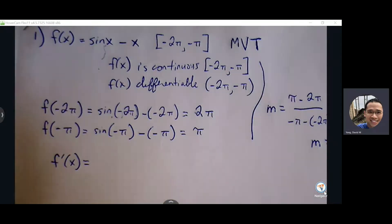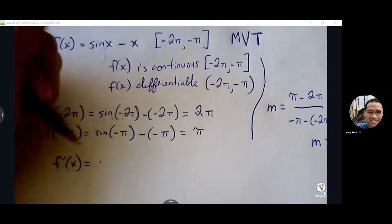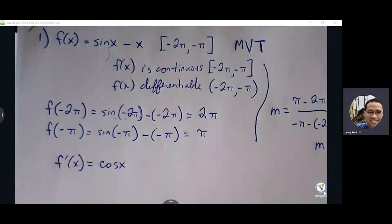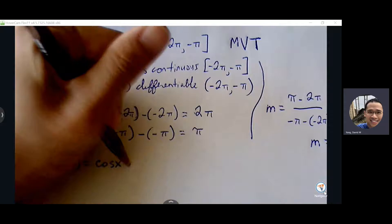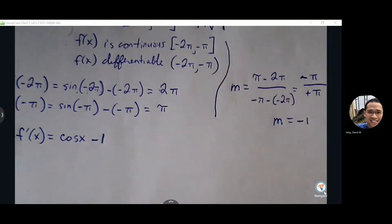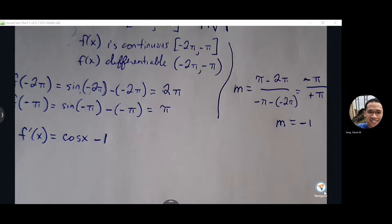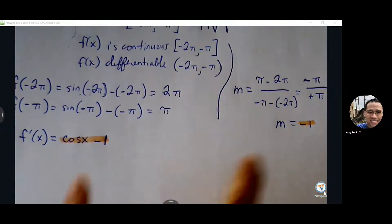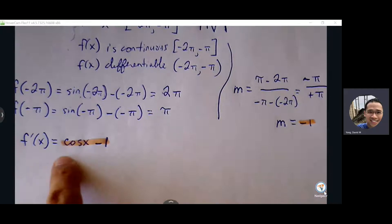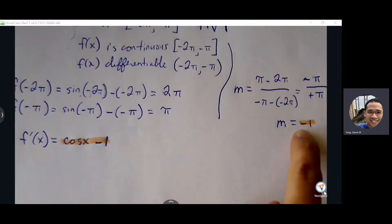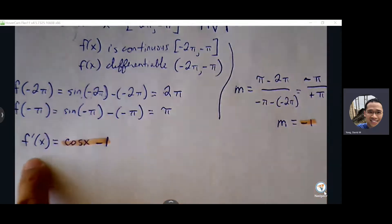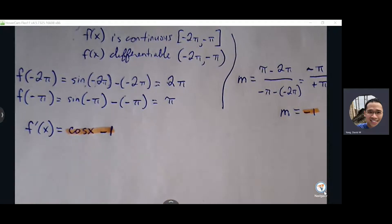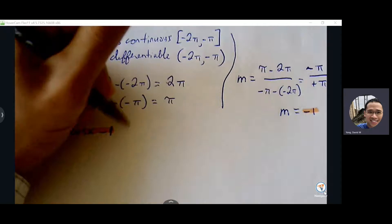Sine x becomes cosine x, and sine's derivative is cosine, cosine's derivative is negative sine, so we get cosine x minus 1. We set this equal to negative one. Make sure we don't insert negative one in for x — that's not the location, that's a slope value. That slope value goes in for the derivative variable, and we're going to solve forward to find the x location where the function achieves that specific slope.